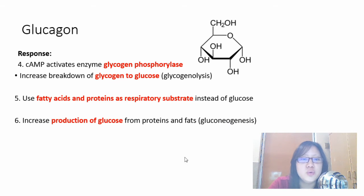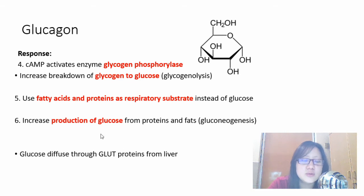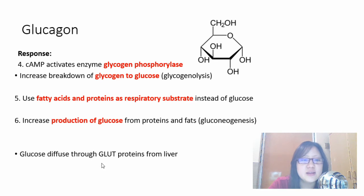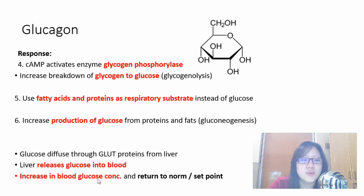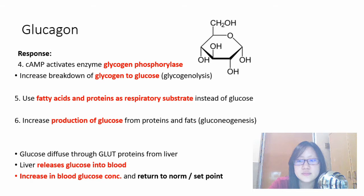As a result of these processes, glucose accumulates in the liver cell and is transported out via glucose transporter proteins from the liver into the blood. This results in an increase in blood glucose concentration, returning it to the normal set point. That is the complete mechanism of glucagon action.